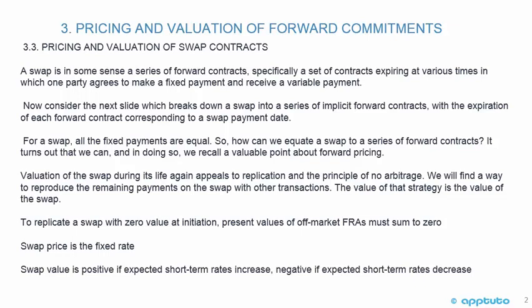A swap is in some sense a series of forward contracts — specifically a set of contracts expiring at various times in which one party agrees to make a fixed payment and receive a variable payment. Consider the next slide, where we're going to break down a swap into a series of implicit forward contracts, with the expiration of each forward contract corresponding to a swap payment date.